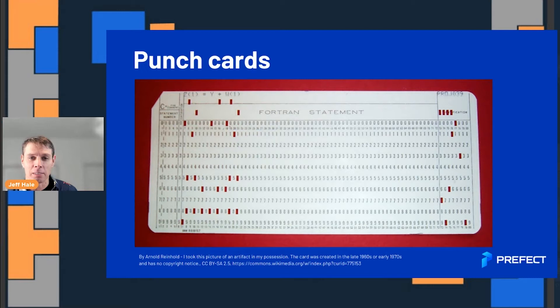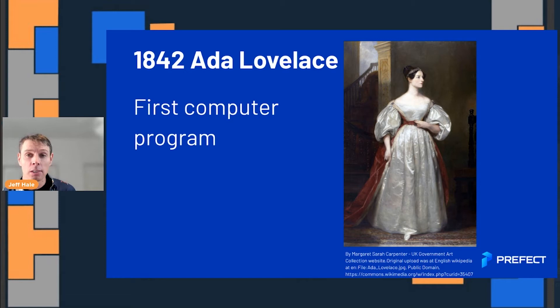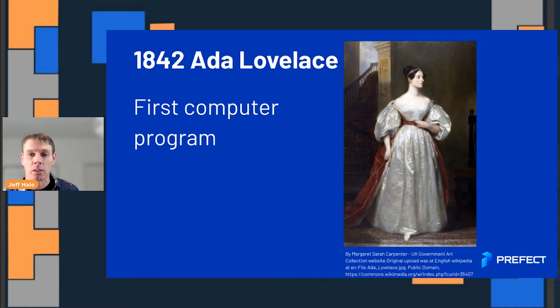The analytical engine used a punch card system that came from weaving looms. This picture of a punch card is actually from the 1970s — my father actually used a punch card programming system when he was first learning to use computers. Amazing that this technology lasted for such a long time, all the way from Babbage's ideas up to the 70s. And in 1842, Ada Lovelace used Babbage's ideas and became the first computer programmer, writing the first program for a device that didn't really even exist yet — which is totally mind-blowing.